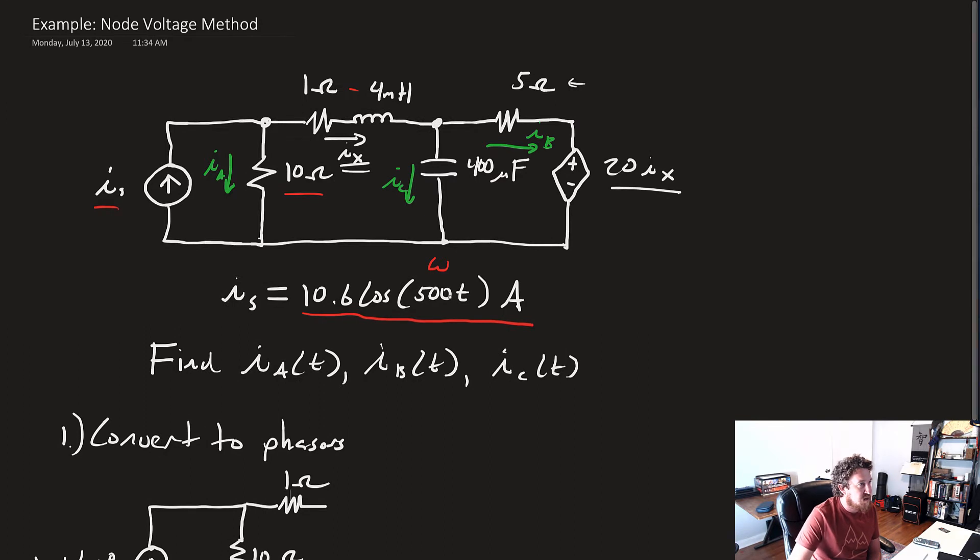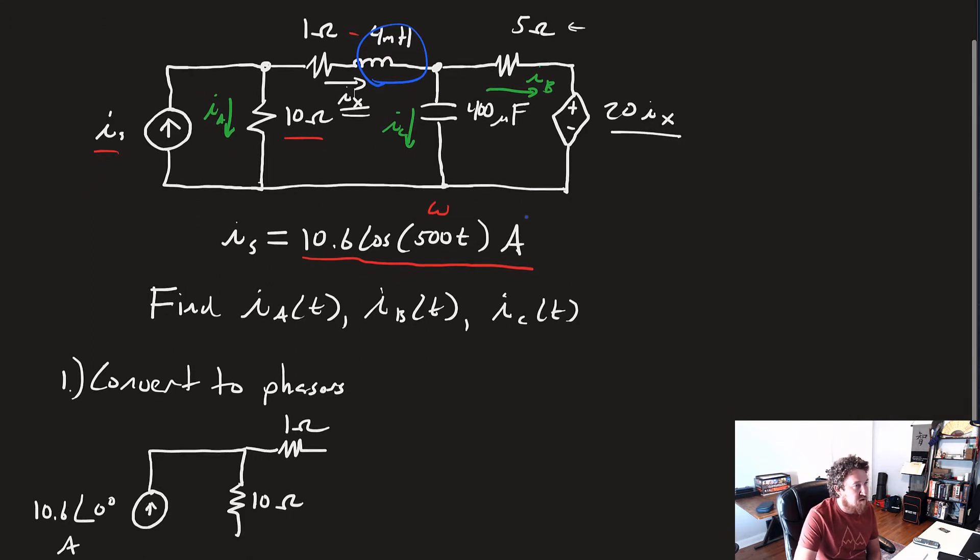But then we need to figure out what this inductor is. That's a 4 millihenry inductor. ZL equals J omega L, which equals J times 500 times 4 times 10 to the negative 3rd. So ZL equals J2 ohms.